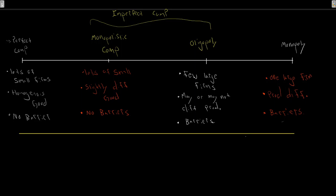Let's give a brief example in the Canadian context of firms in each case. For perfect competition, this is going to be a lot of agriculture — a whole bunch of different farmers all growing wheat. Wheat is wheat; it doesn't really matter which farm it comes from. So agriculture is going to be modeled as perfectly competitive, which is where we talked a lot about an orchardist making apples.